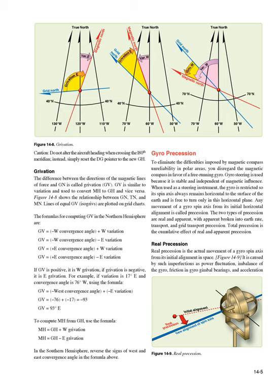Gyro precession. To eliminate the difficulties imposed by magnetic compass unreliability in polar areas, you disregard the magnetic compass in favor of a free-running gyro. Gyro steering is used because it is stable and independent of magnetic influence. When used as a steering instrument, the gyro is restricted so its spin axis always remains horizontal to the surface of the earth and is free to turn only in this horizontal plane. Any movement of a gyro spin axis from its initial horizontal alignment is called precession. The two types of precession are real and apparent, with apparent broken into earth rate, transport, and grid transport precession. Total precession is the cumulative effect of real and apparent precession.